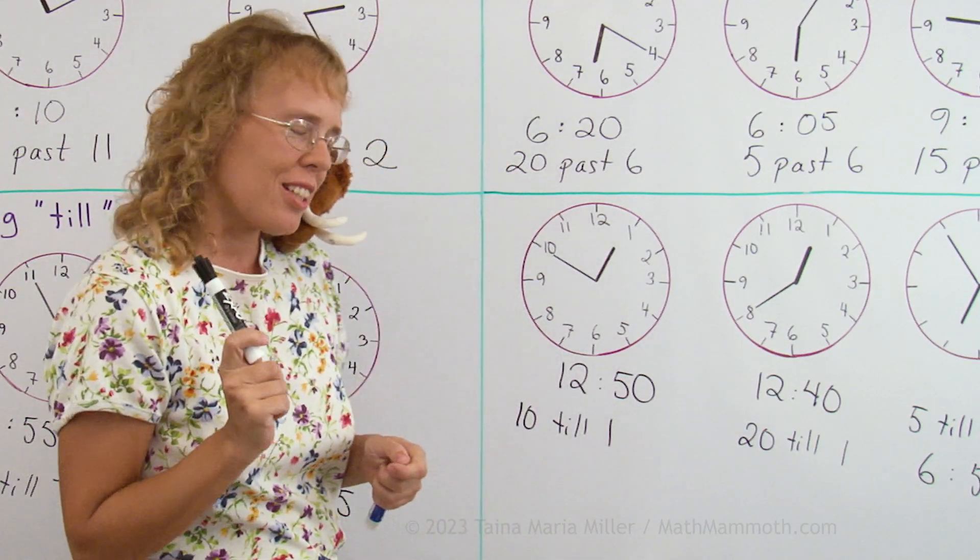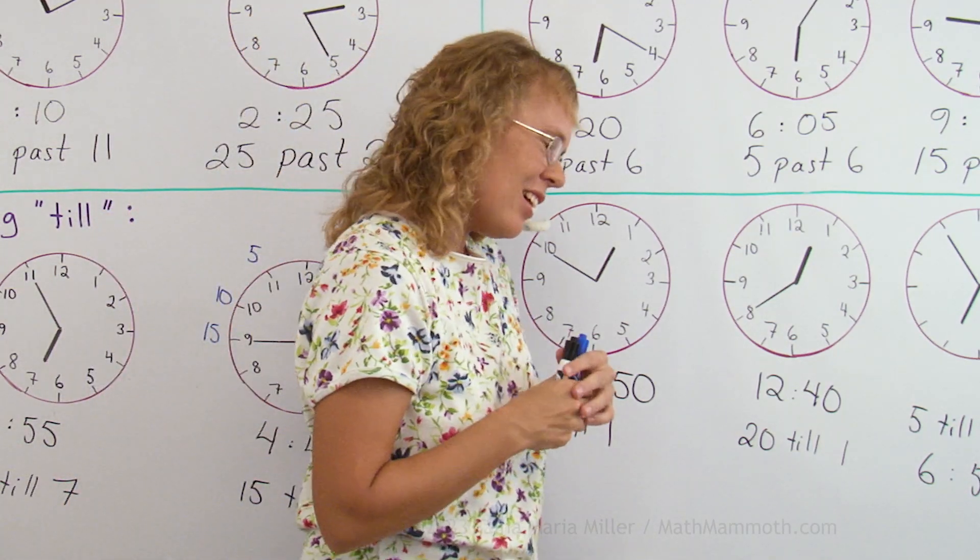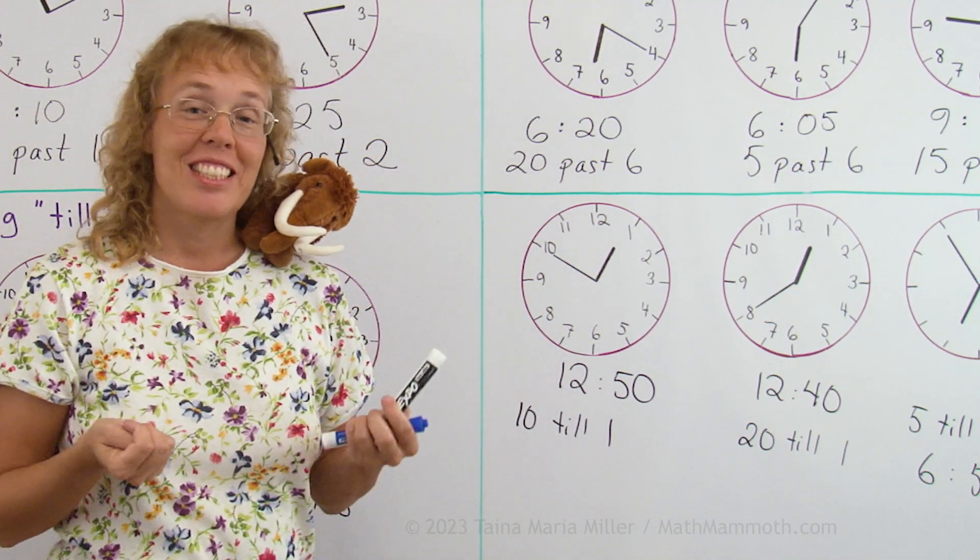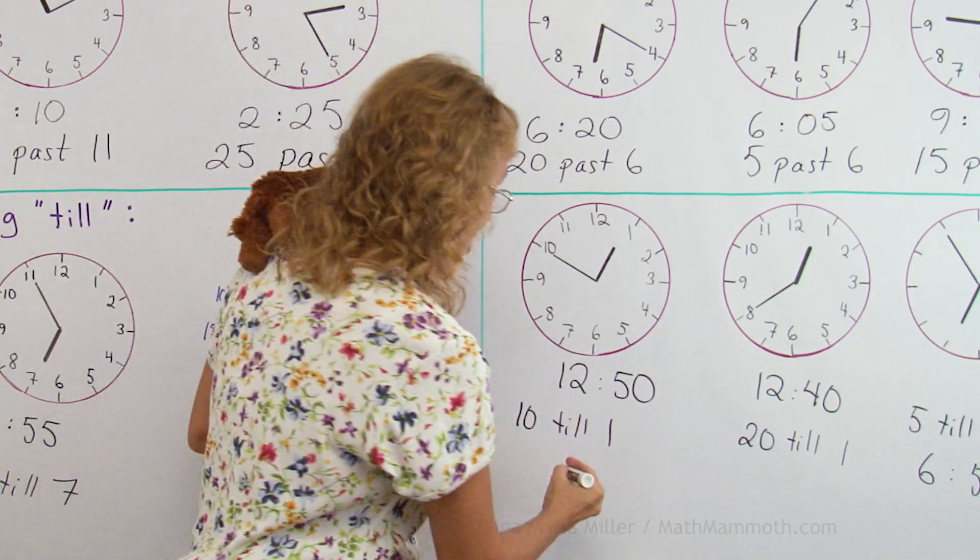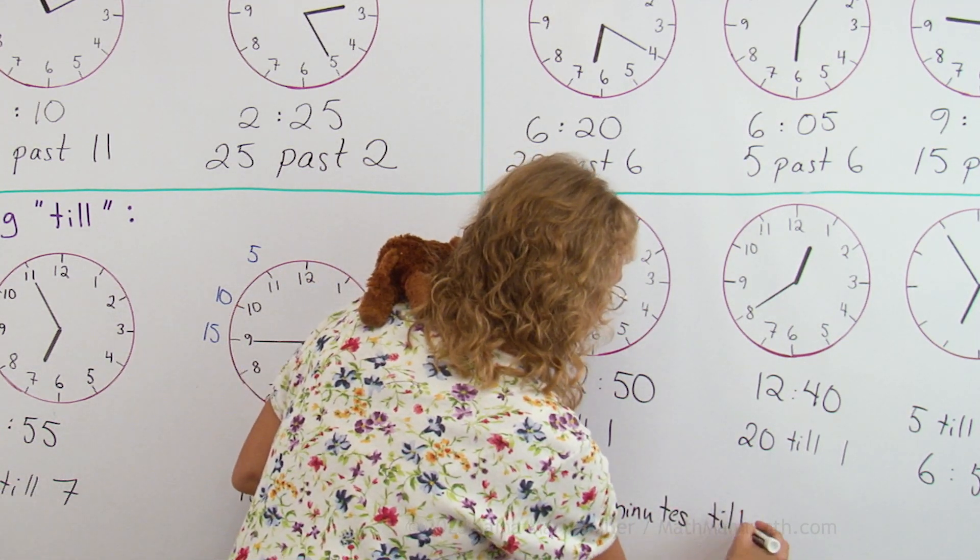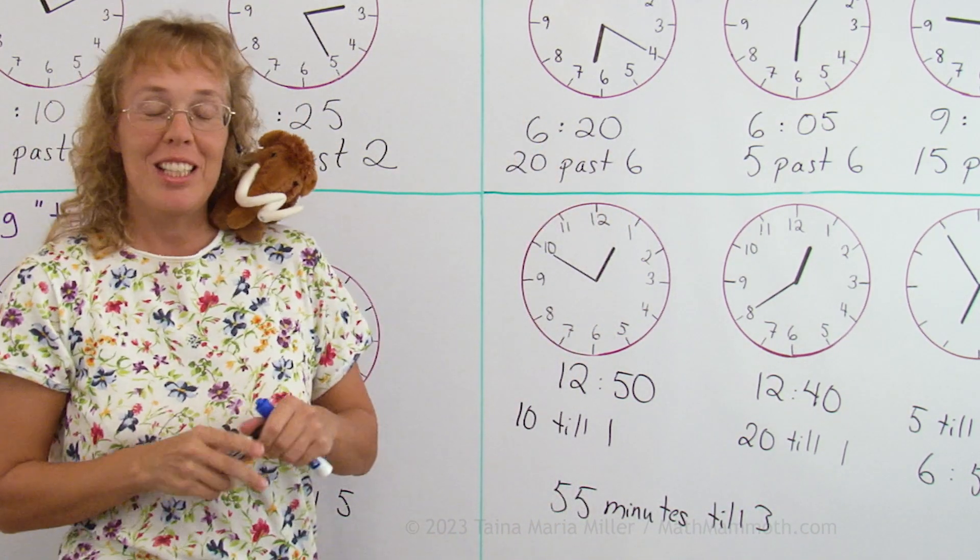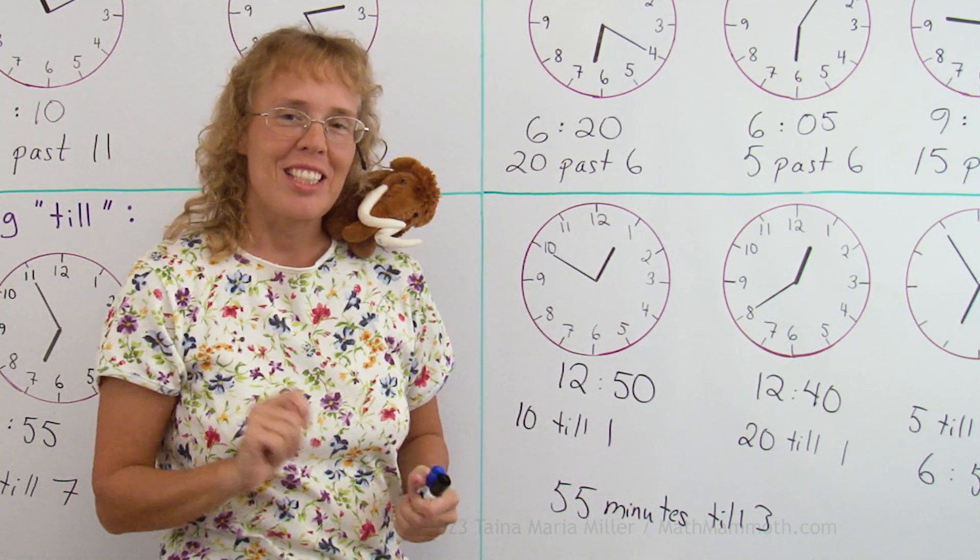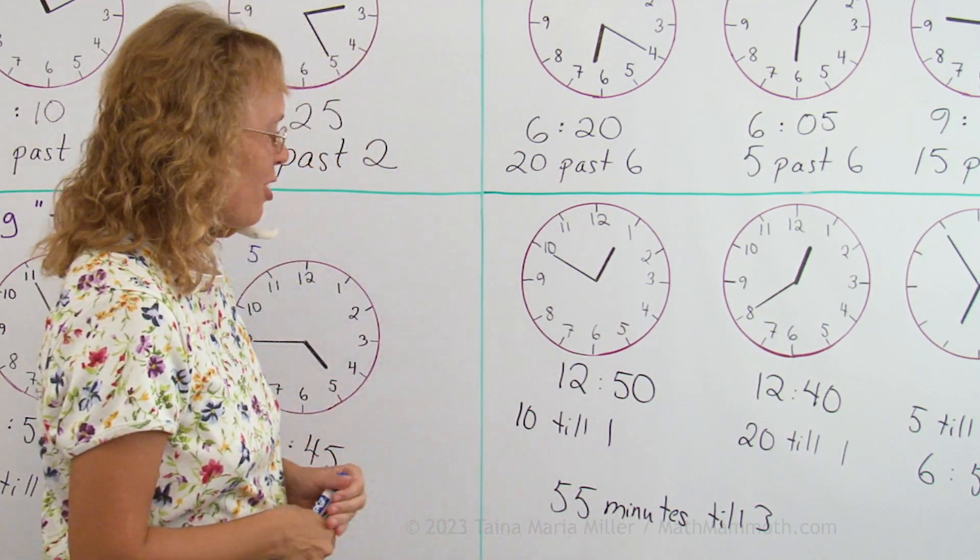Matty has a challenge for you, just wait a second. What time is it if it is 55 minutes till 3? That's kind of weird. What time is it? Well, actually, there's another way of saying that. What's the usual way of saying such a funny time? 55 minutes till 3.